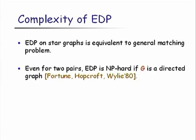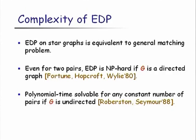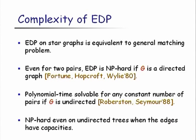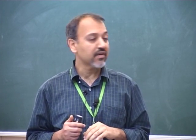When the graph is directed, even on just two pairs S1T1, S2T2, the problem is NP-hard to solve. If the graph is undirected, the problem is polytime solvable for any constant number of pairs, but this requires heavy machinery of the graph minors work developed by Robertson and Seymour — a highly non-trivial algorithm. Once the number of pairs is unbounded, the problem is NP-hard even in undirected graphs. Even on undirected trees, if the edges have capacities, the problem is NP-hard. In this talk, we will always assume all edges of the graph have unit capacity.